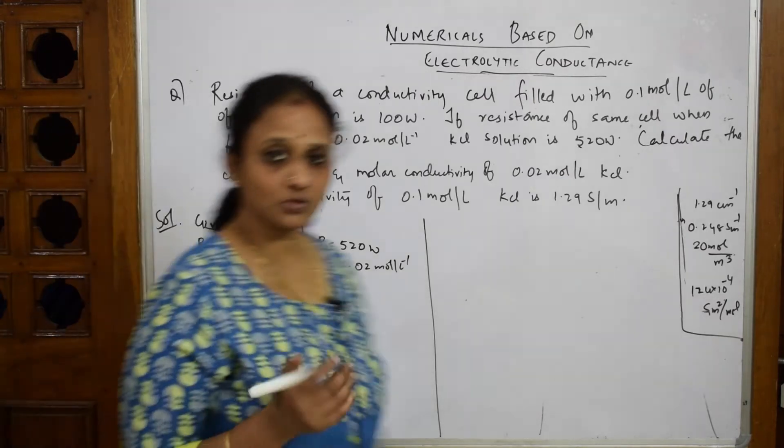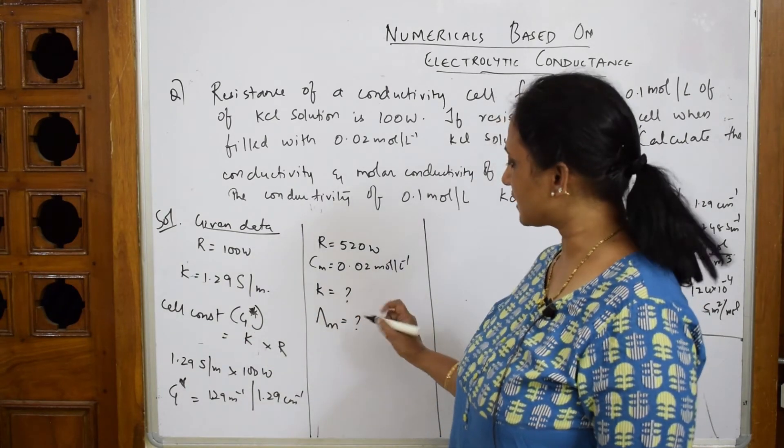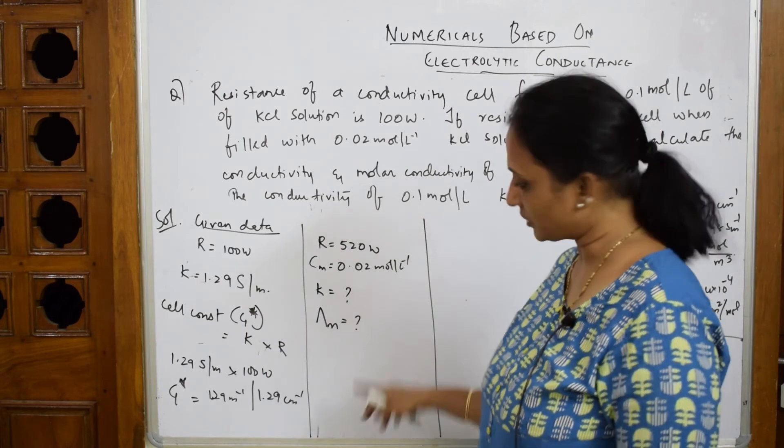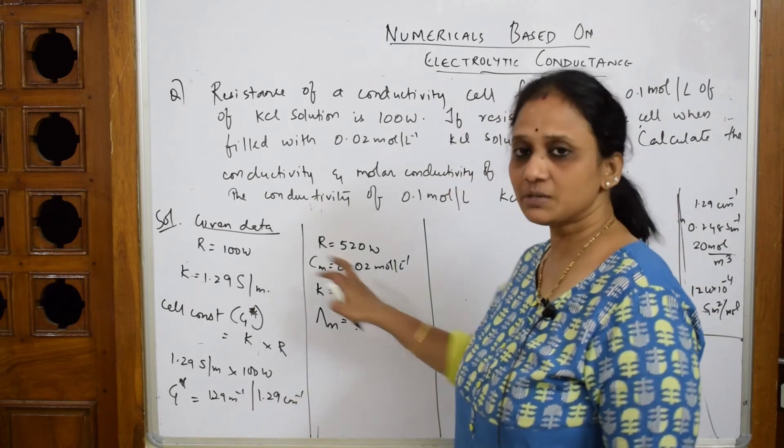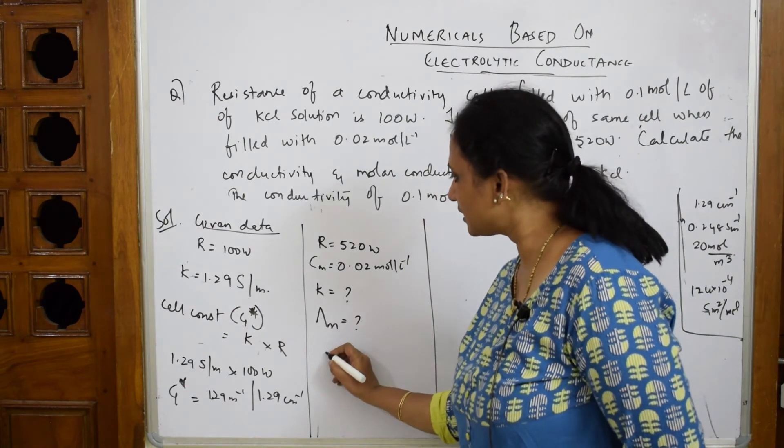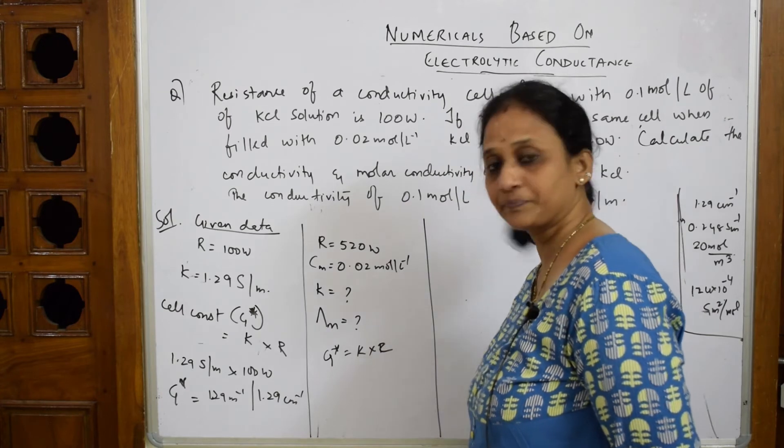Now for the second cell with 0.02 molar concentration, we use the same cell constant. The formula is G* = K × R, so K = G*/R.